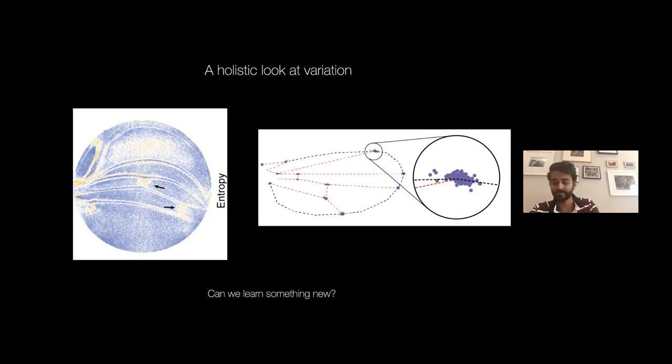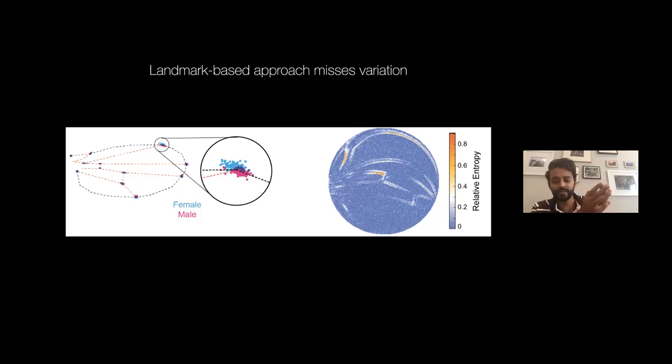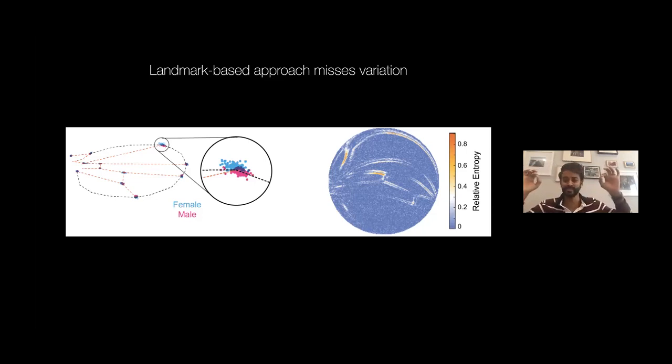Can we learn something new? Who cares about quantitative methods—you have to make discovery. This is a very qualitative way of showing you that when we now juxtapose males and females to each other, that heat map is asking which pixels are different across the males and the females. What you can see is that the variation is not just at the landmarks. In fact, the variation varies along veins. That's the kind of variation that cannot be captured by landmarks.